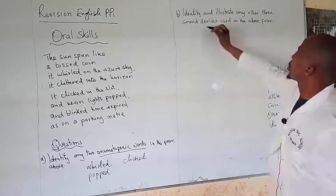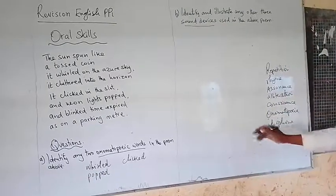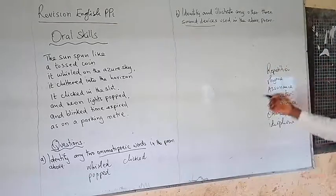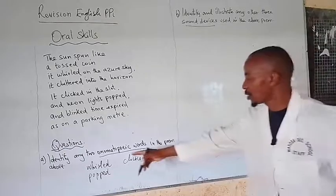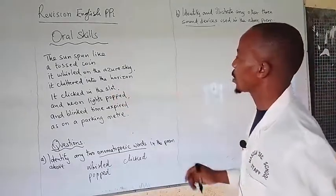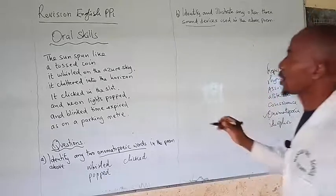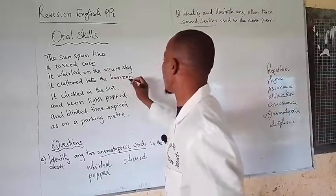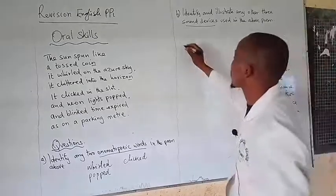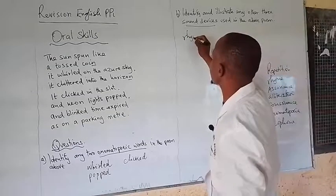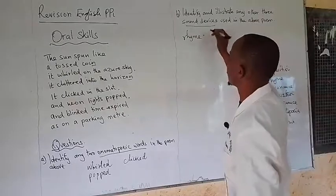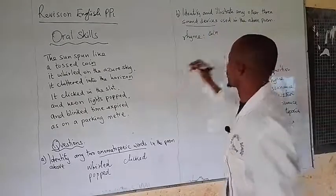So when somebody is talking about sound devices, we must have all these in mind and then we address ourselves to the poem to see which ones are present in this particular poem. So already we've found onomatopoeia there. We have to run through the poem and get to see which ones are present. For example, we have 'coin' and 'horizon' — that is what we may be referring to as presence of rhyme. Rhyme is talking about the sameness of sounds at the end of the line, so 'coin' is rhyming with 'horizon.'